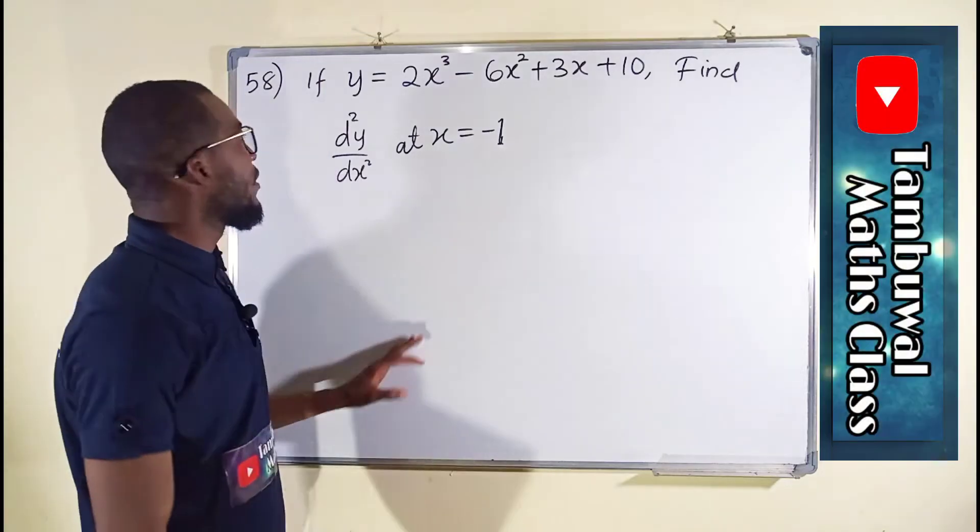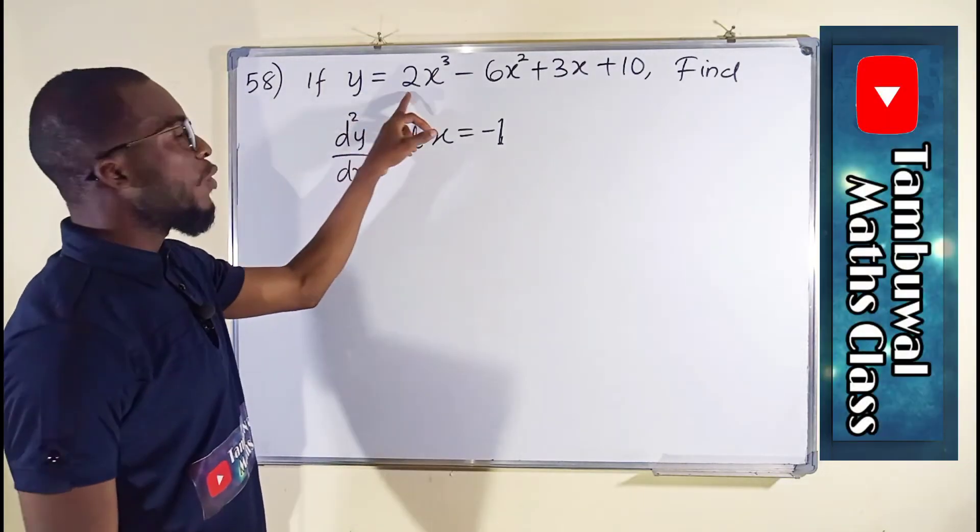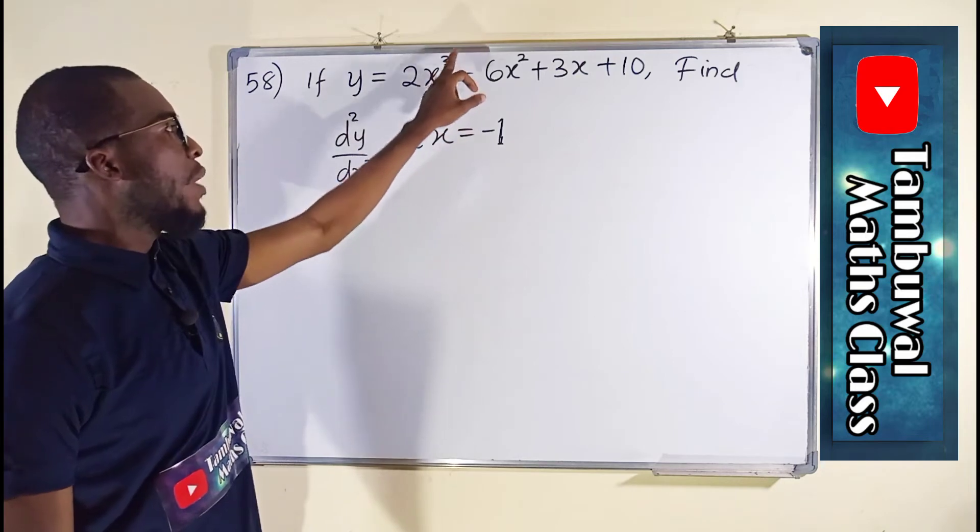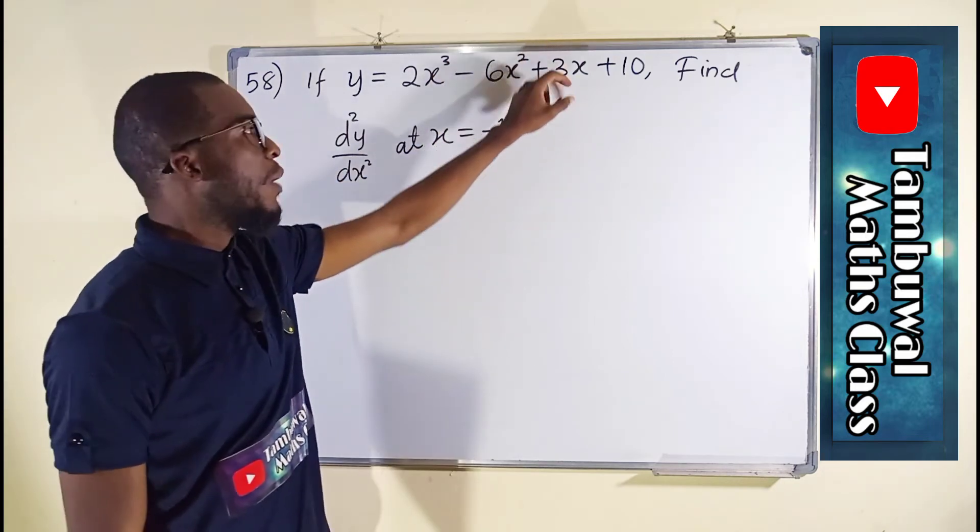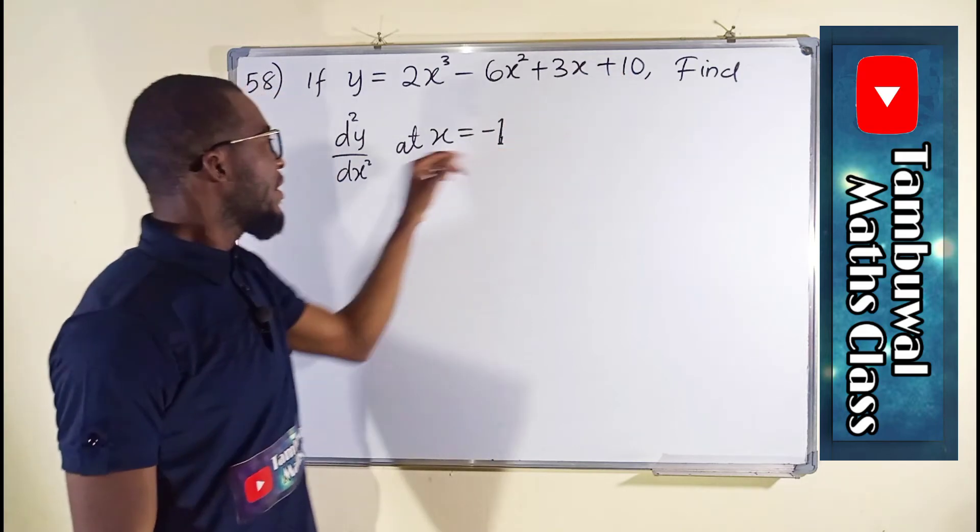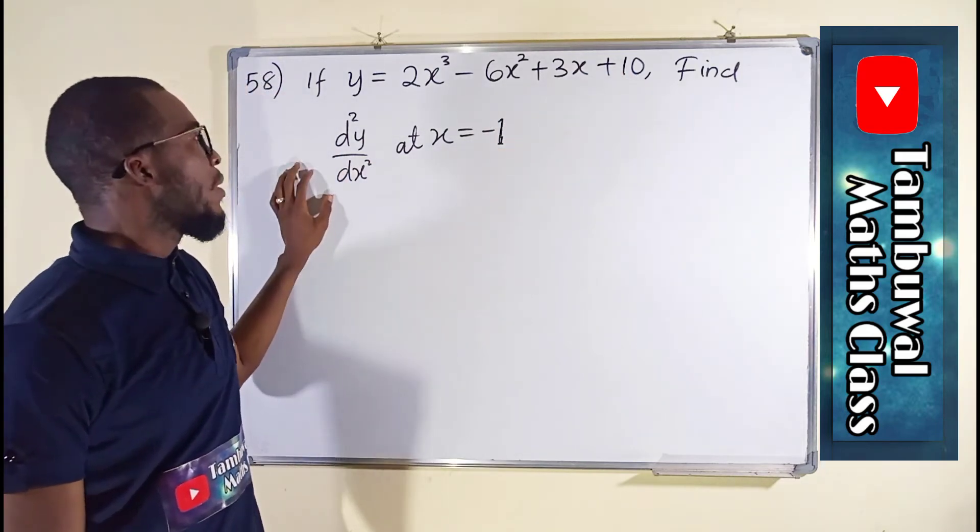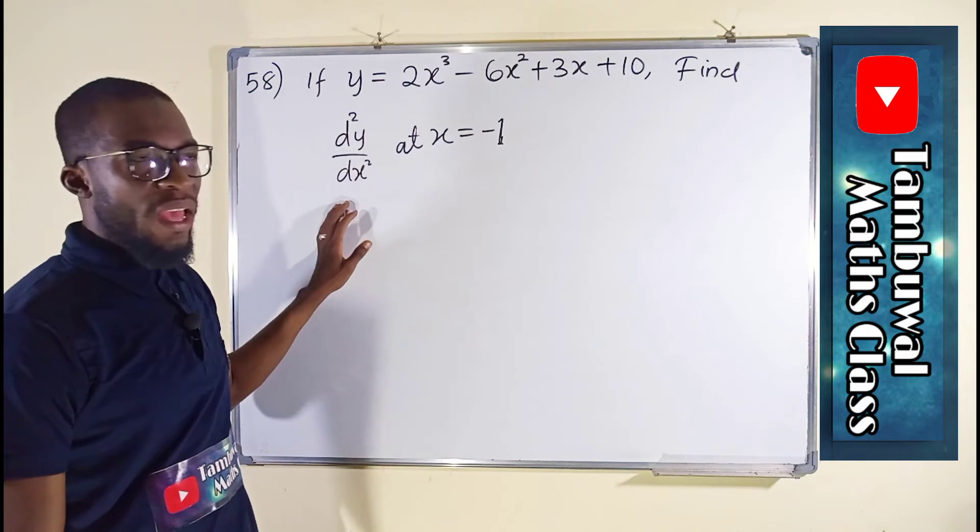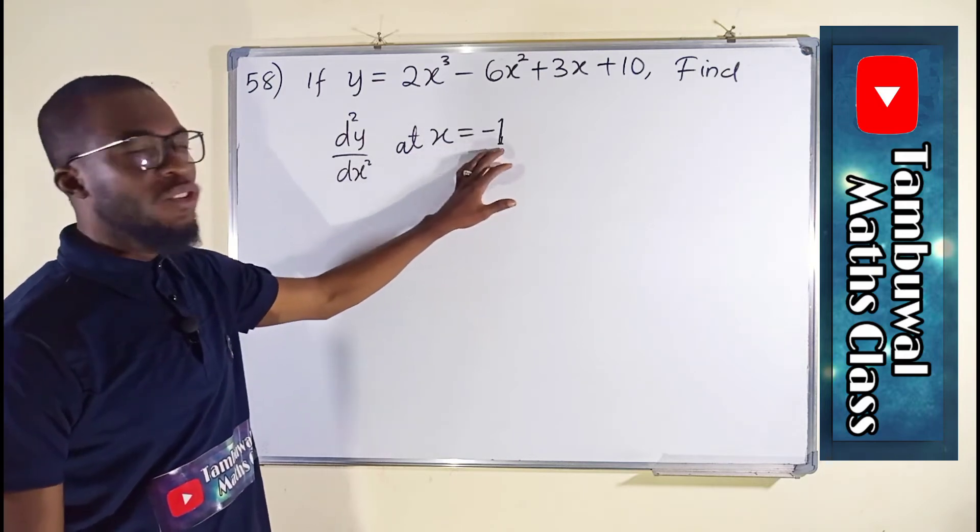Question number 58: If y equals 2x to the third power minus 6x to the second power plus 3x plus 10, find the second derivative of y with respect to x at x equal to negative 1.